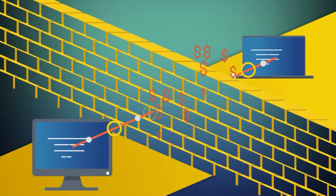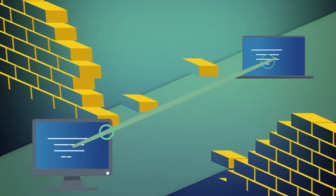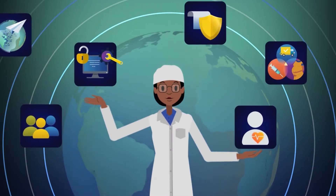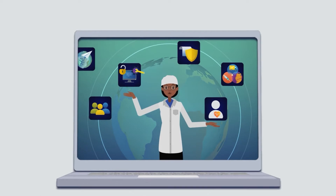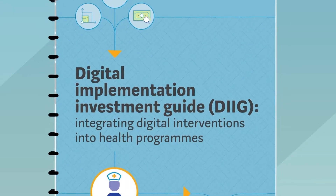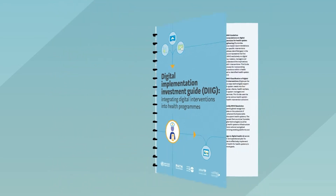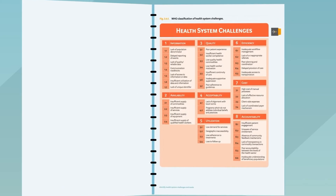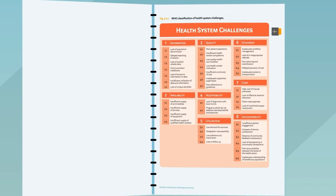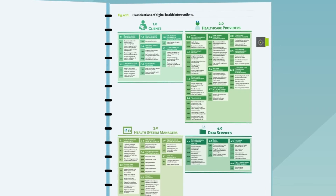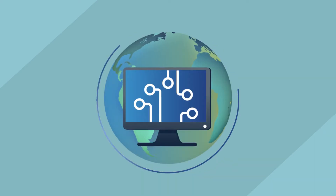Global goods are used to cut down on unnecessary spending and provide sustainable software solutions for countries, thereby saving more lives and improving the health of humans all over the world. The WHO Classification Framework in the Digital Implementation Investment Guide has identified 39 potential health system challenges and over 80 specific ways that digital tools can improve health services. These interventions are parceled in a variety of digital health global goods.